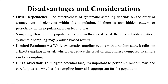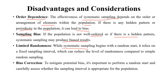A few disadvantages to consider: order dependence — the effectiveness of systematic sampling depends on the order or arrangement of elements within the population; if there is any hidden pattern or periodicity in the population, it can lead to bias. Sampling bias — if the population is not well ordered or if there is a hidden pattern, systematic sampling may produce biased results. Limited randomness — while systematic sampling begins with a random start, it relies on a fixed sampling interval, which can reduce the level of randomness compared to simple random sampling.